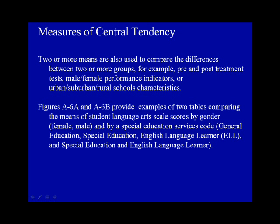Two or more means are also used to compare the differences between two or more groups. For example, pre- and post-treatment tests, male-female performance indicators, or urban-suburban-rural schools' characteristics. Figures A6A and A6B provide examples of two tables comparing the means of student language arts scale scores by gender and by special education services code.